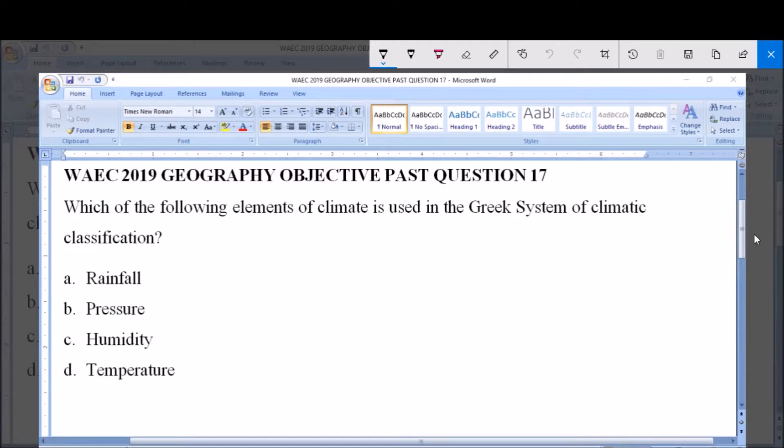Which of the following elements of climate is used in the Greek system of climatic classification? A. Rainfall. B. Pressure. C. Humidity. D. Temperature.